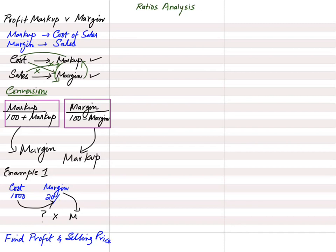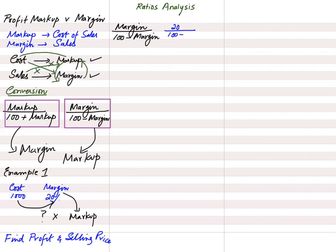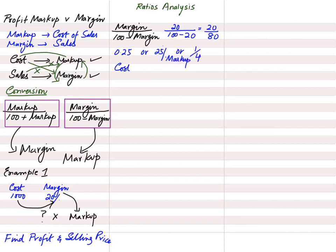We need to convert the margin into markup percentage using the formula: margin ÷ (100 − margin). The margin given is 20%, so: 20 ÷ (100 − 20) = 20 ÷ 80 = 1/4 = 0.25, which means 25%. So our markup becomes 25% and the margin percentage is 20%.